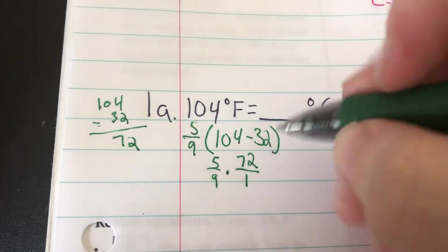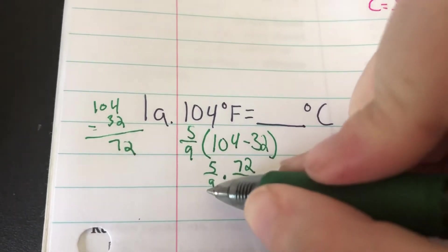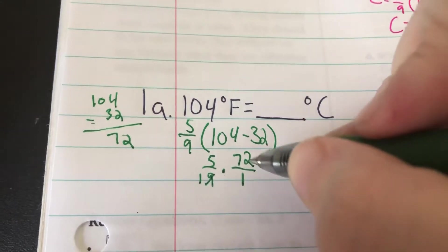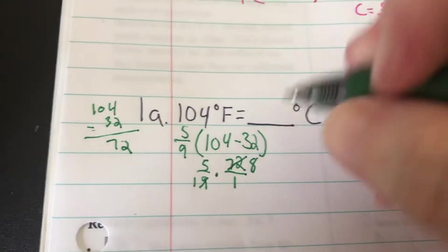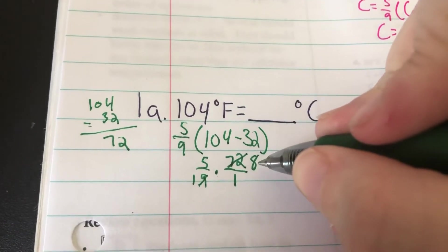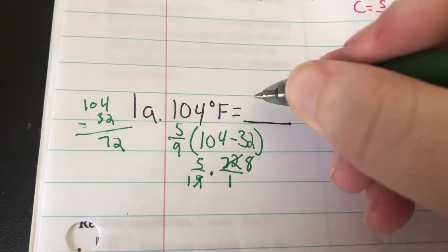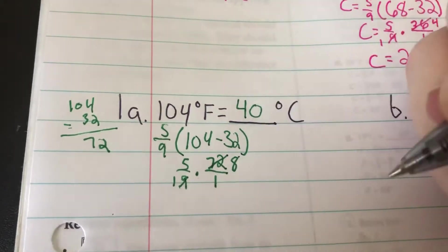Then 5/9 times 72 over 1. I know that 9 can go into 72. It goes into 9 one time, it goes into 72 eight times. 5 times 8 is 40 over 1. So it is 40 degrees Celsius.